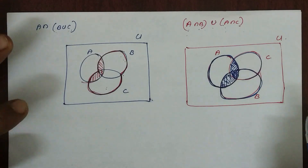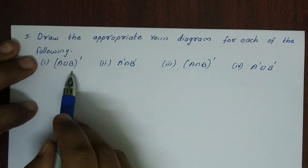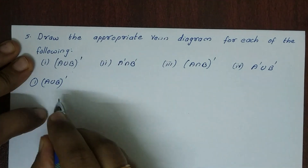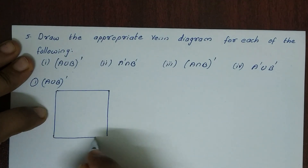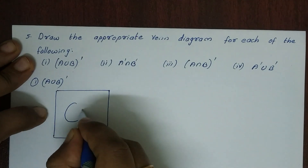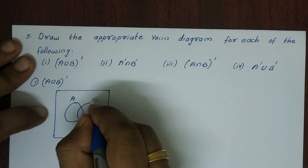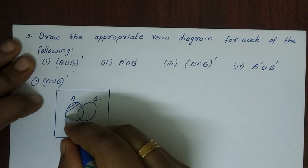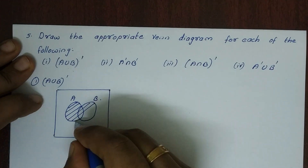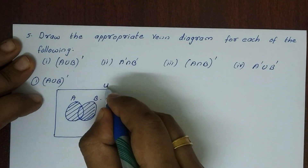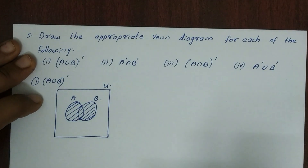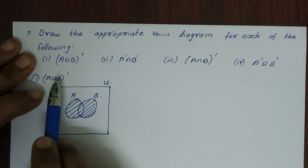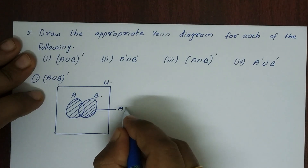Now we will do exercise 1.5 Venn diagram verification. First question: A union B the whole complement. Draw a rectangle for the universal set U with sets A and B inside. Shade A union B — all elements in A or B — then take its complement, which is the region outside A union B.